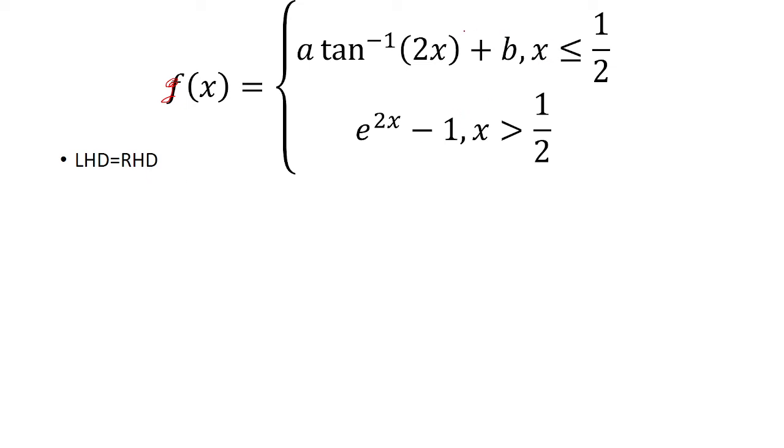The left-hand derivative, we'll use the top function for it. And we'll get 2a over 1 plus 4x squared. The way I got that is, well, the derivative of inverse tangent of x is 1 over 1 plus x squared. So the derivative of inverse tangent of 2x will just be 1 over 1 plus 2x quantity squared times chain rule times 2, which is 2 over 1 plus 4x squared.